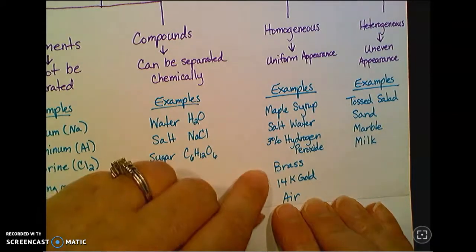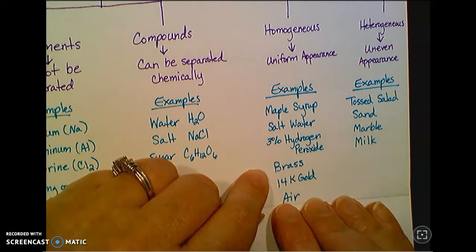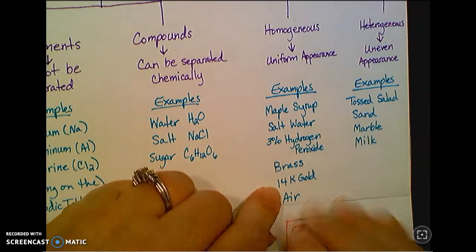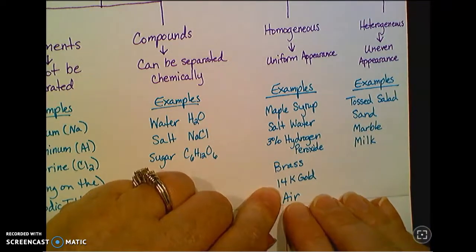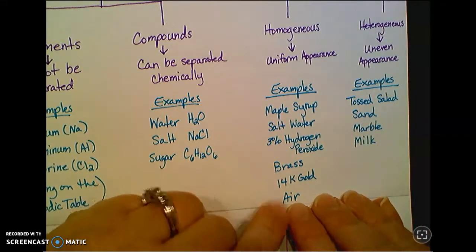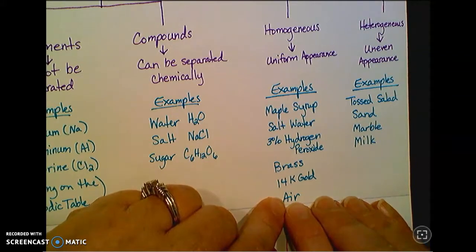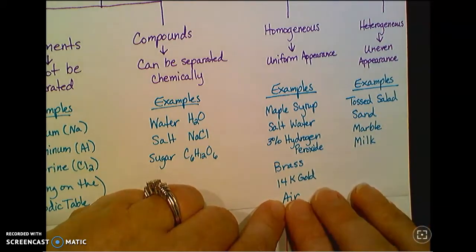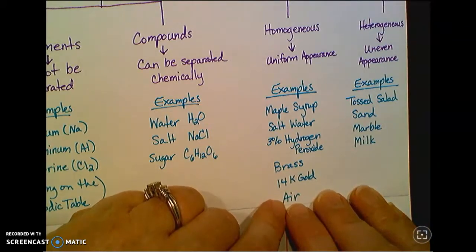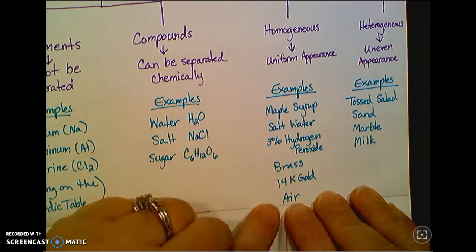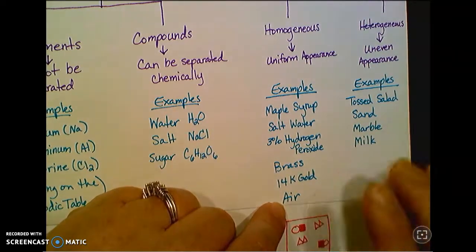Brass and 14 karat gold are examples of homogeneous mixtures that are actually solids. Those are alloys. 14 karat gold is not pure gold. It's got gold and a little bit of copper, maybe some silver mixed in it to make it stronger and to make it a little cheaper. Air is also a homogeneous mixture most of the time. If you're out west right now where they've got those wildfires, the air is not homogeneous. It looks more heterogeneous. But normally we consider air a homogeneous mixture: nitrogen, oxygen, carbon dioxide, all those gases mixed together. But you can't see it. You can't tell that it's mixed.